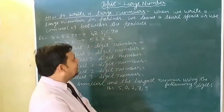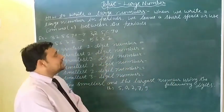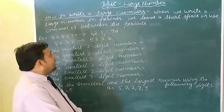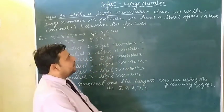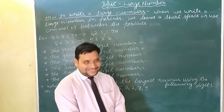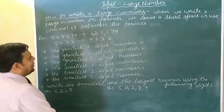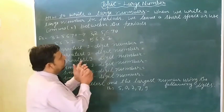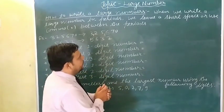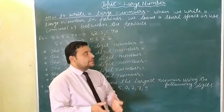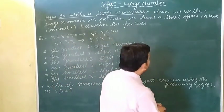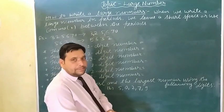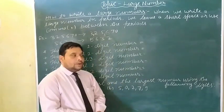Good morning students. Today's topic is large numbers. How do we write a large number? When we write a large number in periods, we leave a short space or use commas for the periods.